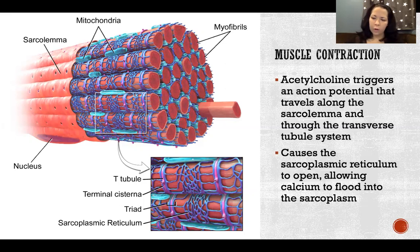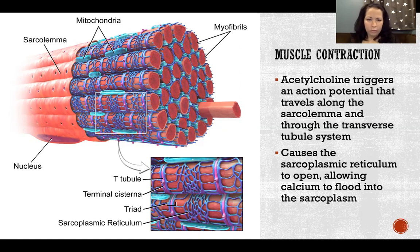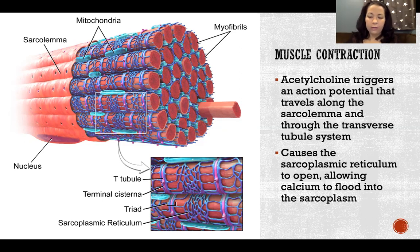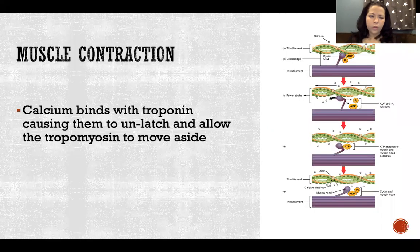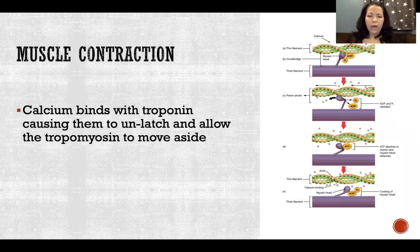This causes the sarcoplasmic reticulum to open throughout the muscle fiber. The sarcoplasmic reticulum is storing calcium ions for when there is an action potential. When the action potential arrives, it causes the sarcoplasmic reticulum to open and release a flood of calcium ions into the sarcoplasm, so now we have calcium ions flooding all the myofibrils down to the thin filaments of the sarcomeres.